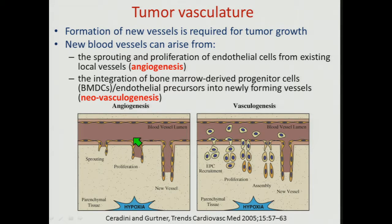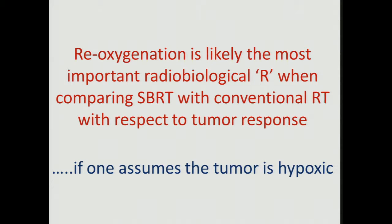Clearly, hypoxia is a key driver producing cytokines that drive this process, and that hypoxia is driven by vascular damage caused by radiation exposure. In terms of the 4 R's in the radiobiology of hypofractionation, reoxygenation is most likely the most significant radiobiological parameter for SBRT when comparing with conventional RT with respect to tumor response — assuming, of course, that your tumor is hypoxic in the first place. There is considerable evidence, as we've seen today, that your tumor is hypoxic.